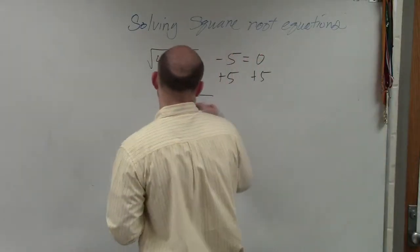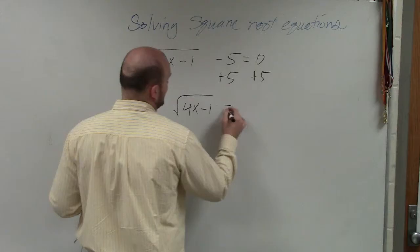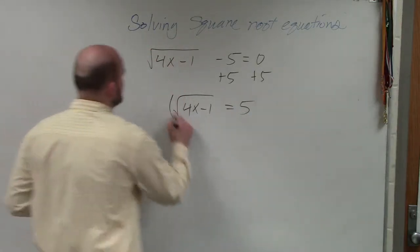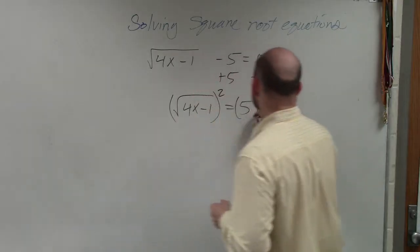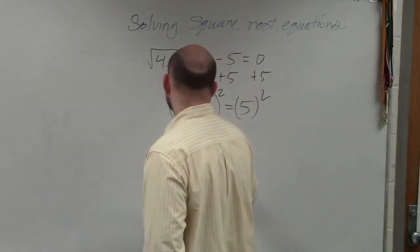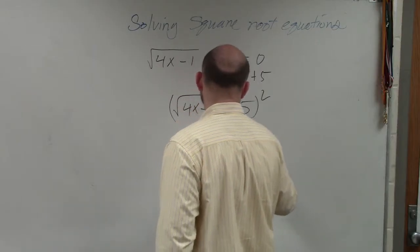So now I have the square root of 4x minus 1 equals positive 5. Now to undo the square root, we are going to square both sides. By squaring both sides, I'm left with 4x minus 1 equals 25.